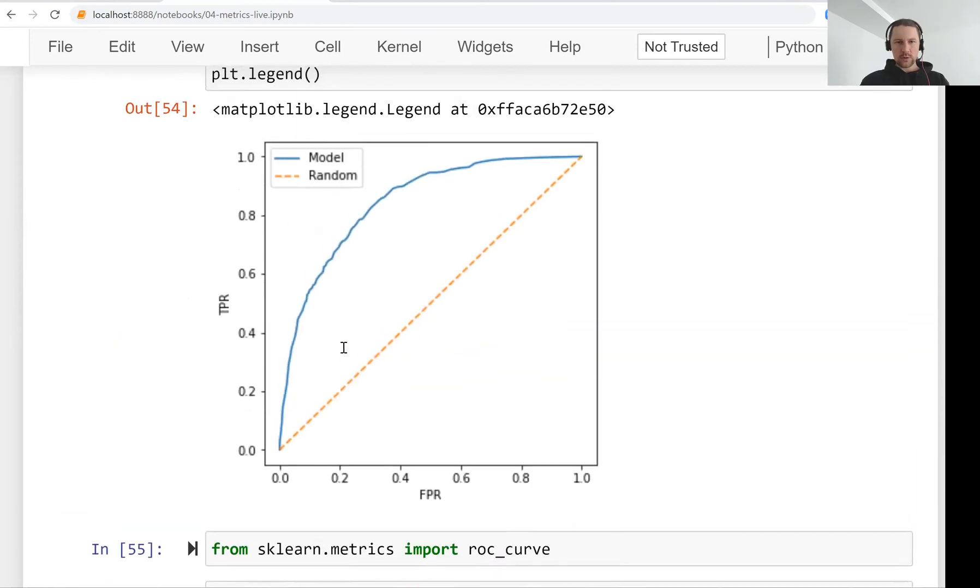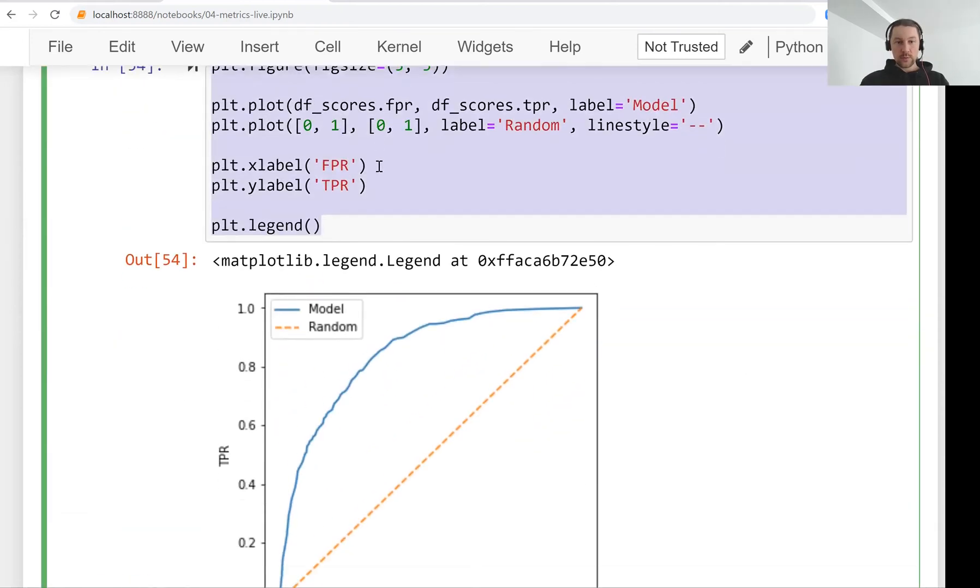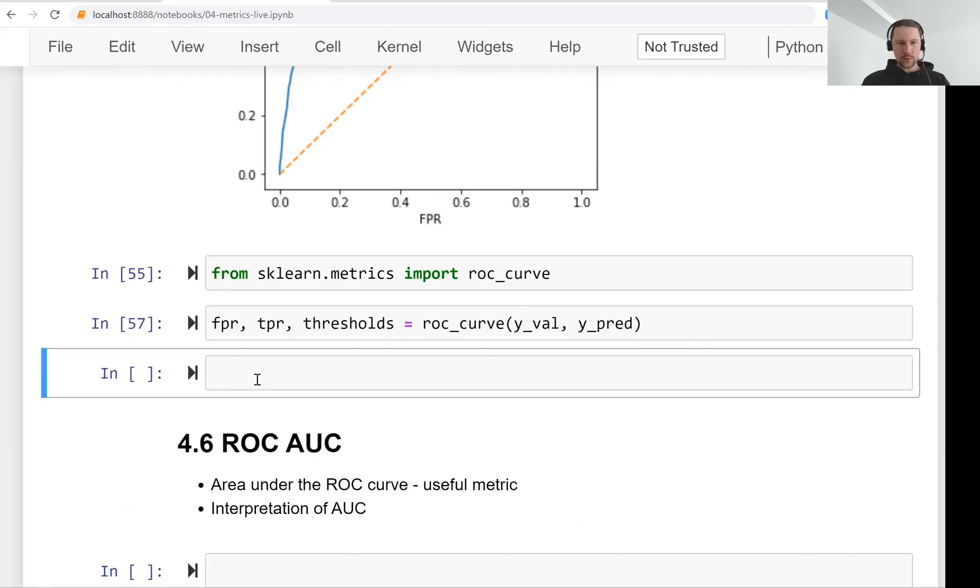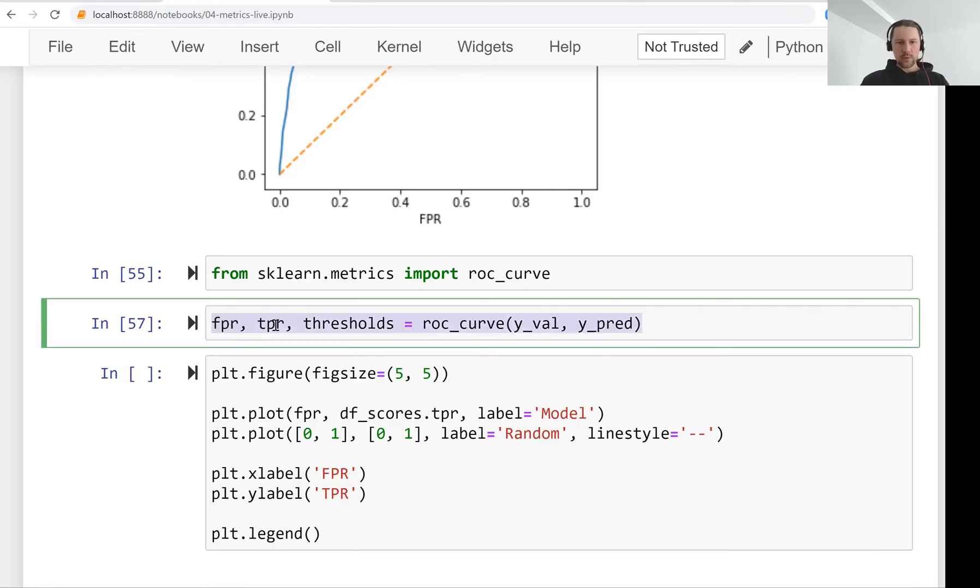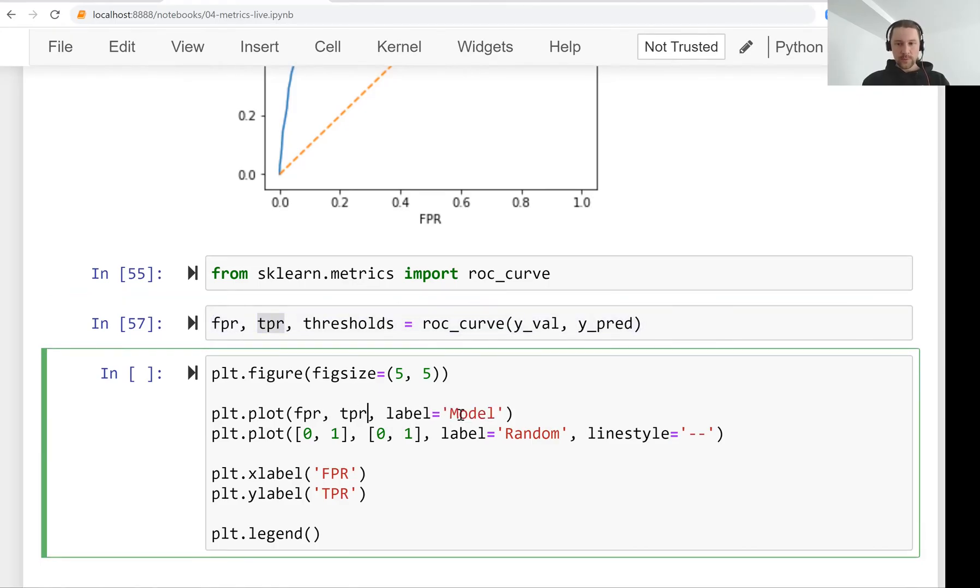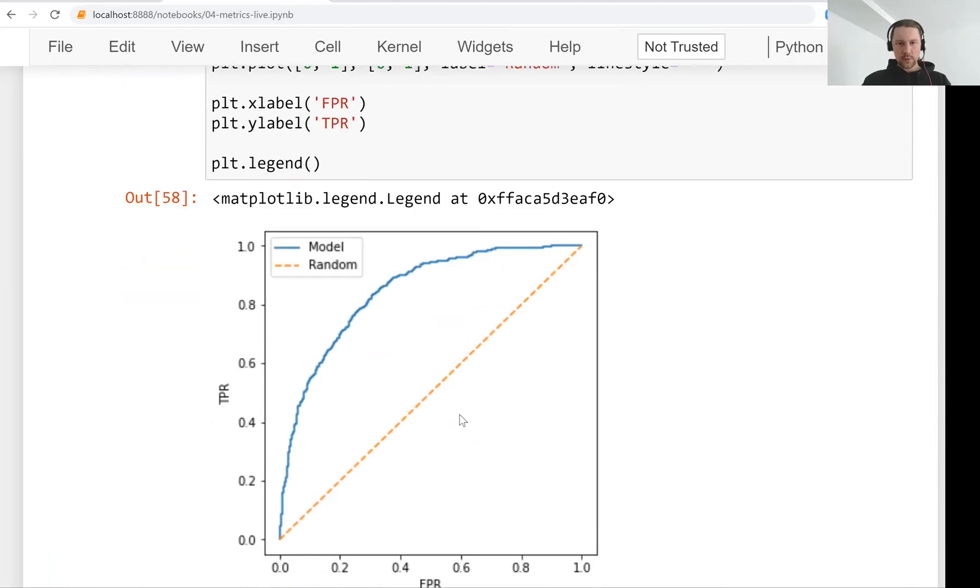We're not really interested in thresholds, but what we can do now is use that for plotting the ROC curve. So instead of using the scores that we computed, we'll just use the output of the roc_curve function. And then this is what we get.